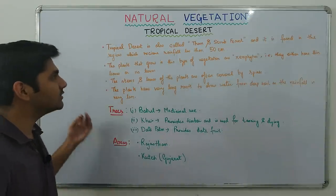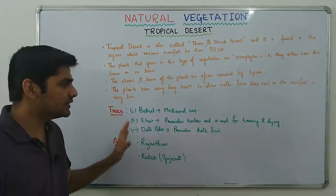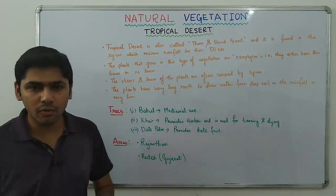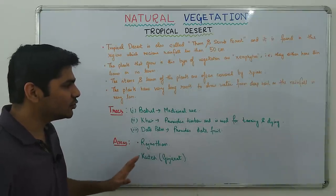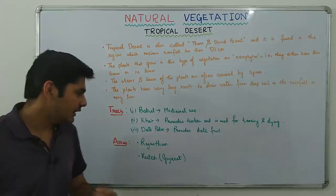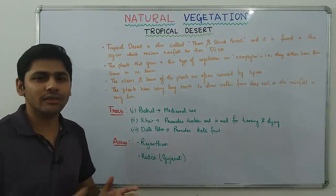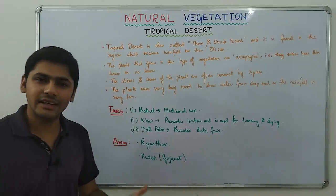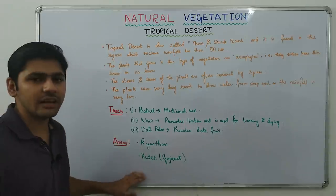The trees found in Tropical Desert are Babool, Kher, and Date Palm. Babool is useful for medicinal purposes — it is good for teeth, gums, and its bark helps cure wounds. Kher provides timber and is used for tanning and dyeing clothes and leather. Date palms provide date fruit. These forests are found in Rajasthan and Kach (Kutch) in Gujarat.